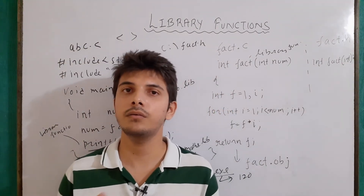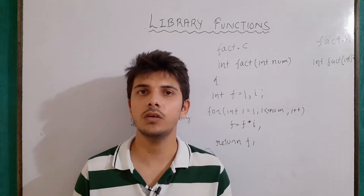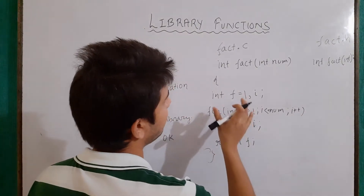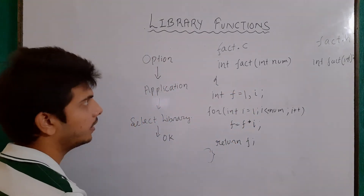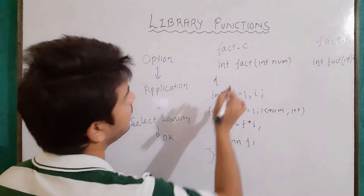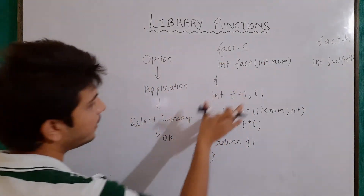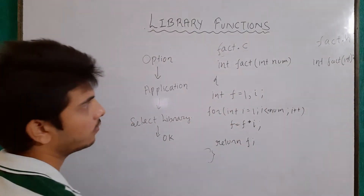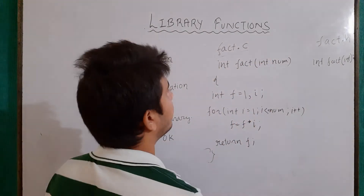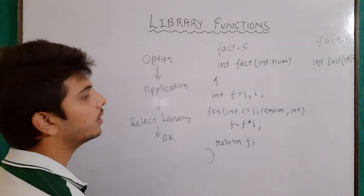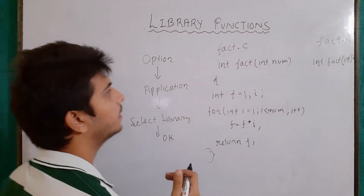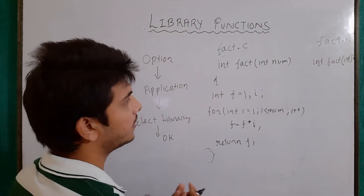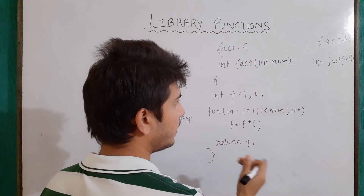Now let's try to create our own personal library file. Let's say I want to create a library file with the name fact.lib. First of all, we will create a file with the name fact.c. Inside it, we will write the definitions of all the functions we want to include in our library file. I am using only one function here for better explanation, but we can also include other functions — such as prime numbers or Fibonacci series — inside this file.